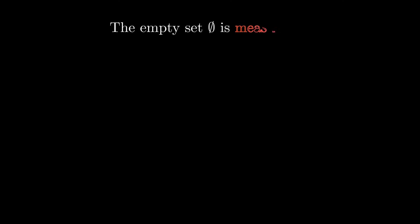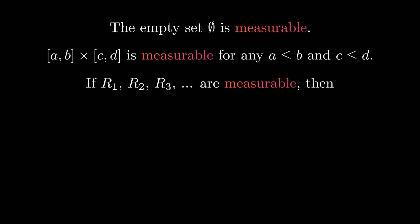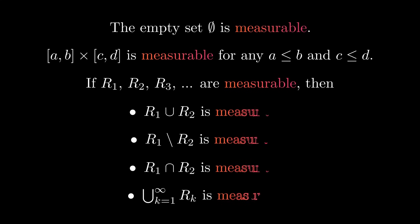Let's look at which sets we were able to assign an area to — these sets will be called measurable. The empty set is measurable, as its area is just zero. Also, every rectangle is measurable. If we know some measurable sets, we can construct more measurable sets by taking the union, the set difference, or the intersection of two sets. We also get a measurable set by taking the countable union of measurable sets.